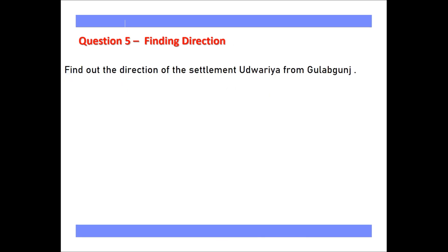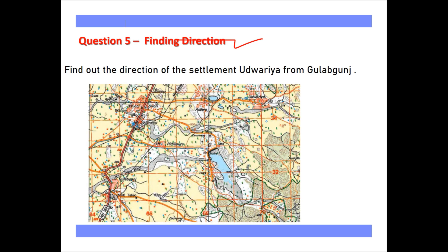Now question number five: finding direction. Two settlements are given — Udhwariya and Gulabkaj. We know there are four major directions: north, south, east, and west. For Toposheet students, remember that east lies on your right-hand side. Between north and east we have north-east; between south and east, south-east; between west and south, south-west; and between north and west, north-west. To answer the direction question, we need to see which quadrant Udhwariya is lying in.